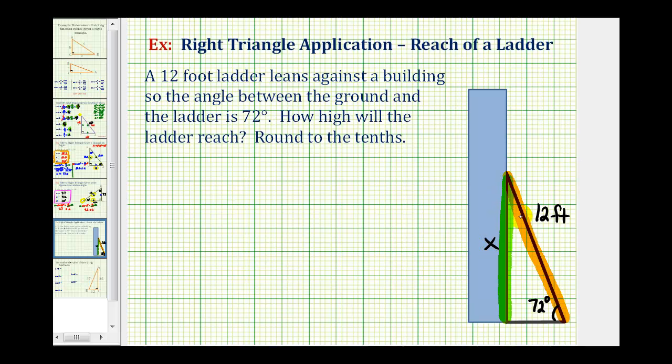To find this length, we'll have to use a trig equation, but first we have to decide what trig function to use. Using the angle of 72 degrees, notice how x would be the length of the opposite side, and 12 is the length of the hypotenuse.